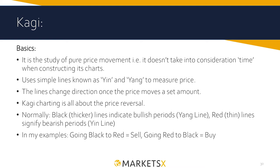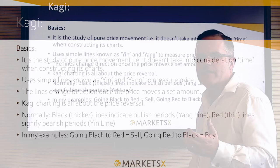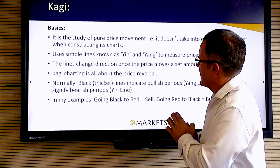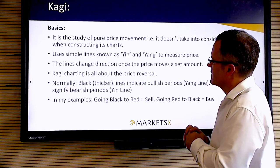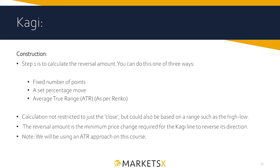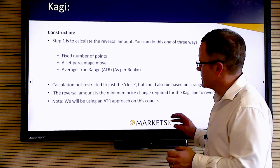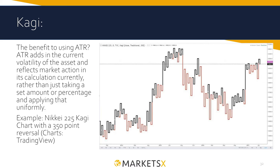Here's the S&P 500 as a Kagi chart and over here as a typical bar chart. You can see it's just making it a lot clearer what's going on in the S&P — we just have a clear up, down, and trend-finding tool. To summarize the basics: it's pure price movement study, we take out time. The two lines are known as yin and yang. The lines change after you've inputted a fixed set amount — like the Renko concept, we can use volatility, a fixed amount, however you want to set it up. Black to red is sell, red to black is buy. Thicker black lines indicate more bullish periods — that's the yang line — and red thin lines signify bearish periods, the yin line.